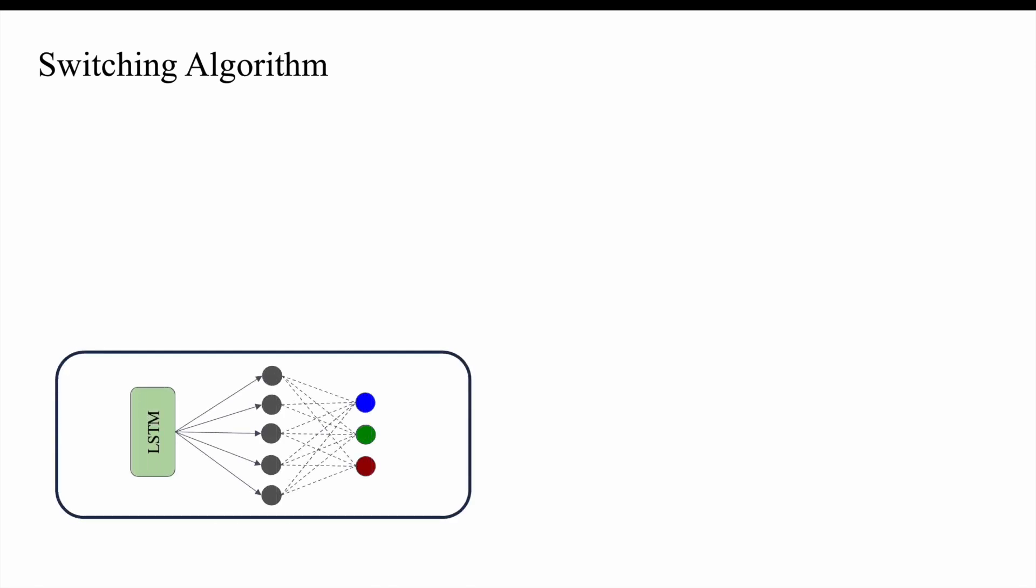A switching law must be developed to choose the correct backup controllers when they are needed. Thus, we use an LSTM deep neural network classifier to complete online switching.